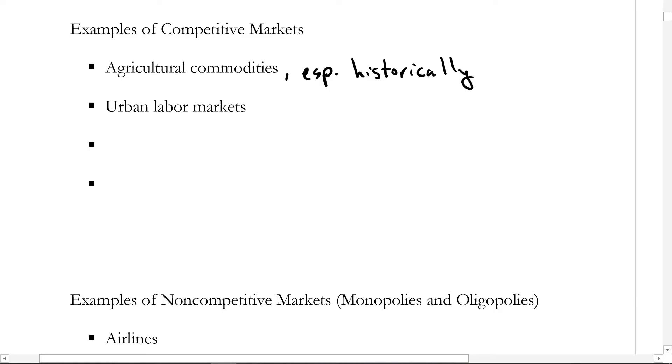Also urban labor markets, urban in particular, because in big cities you have lots of buyers, lots of sellers. If a firm is looking for an accountant and two people have accounting degrees, in a way they're very homogeneous, or they're very similar in what they're offering. So urban labor markets are also quite competitive.